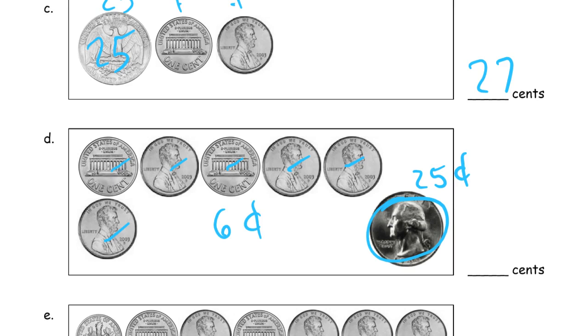Go ahead. But otherwise you can just count up 25, 26, 27, 28, 29, 30, 31. 31 cents.